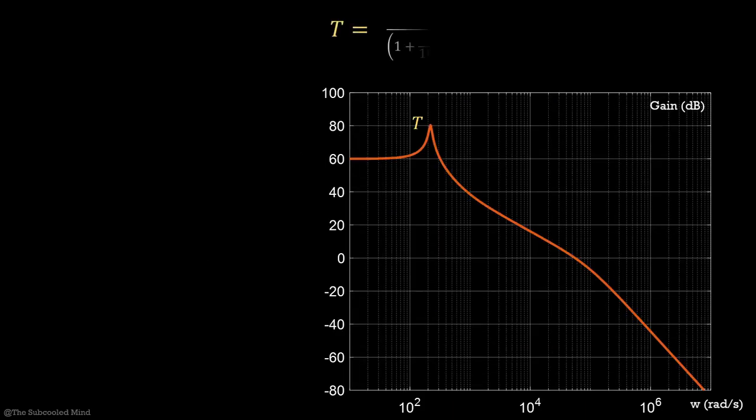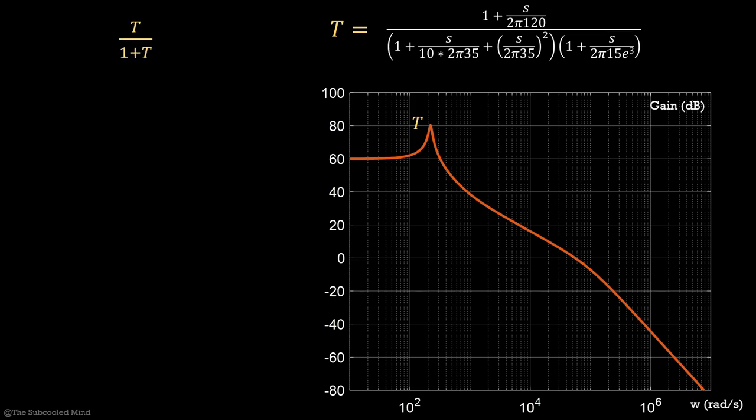Before that, I have drawn a Bode plot of T for just an example. Later, we will take real life systems and find out the loop gain. Now, let us see what T upon 1 plus T looks like. When T is much greater than 1, the expression reduces to T upon T which is equal to 1 or 0 dB. Similarly, when T is much less than 1, the expression reduces to just T or it follows the loop gain.